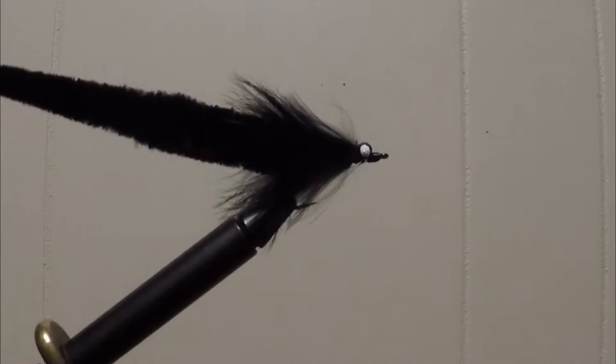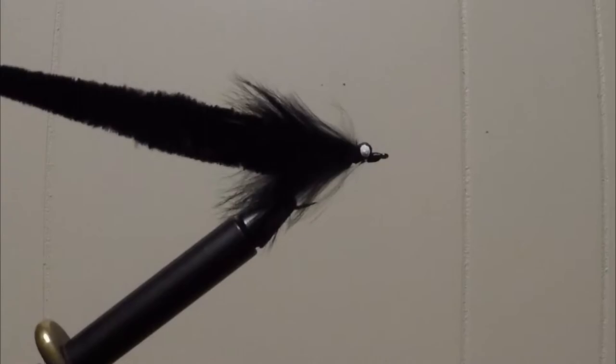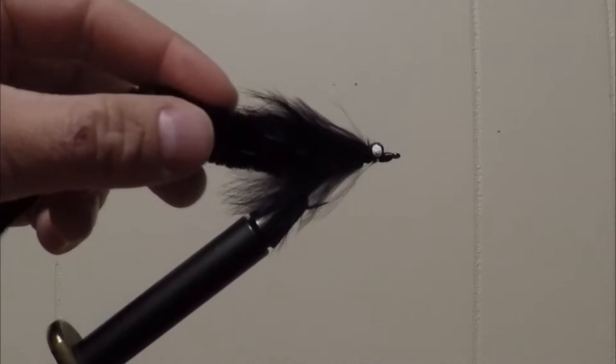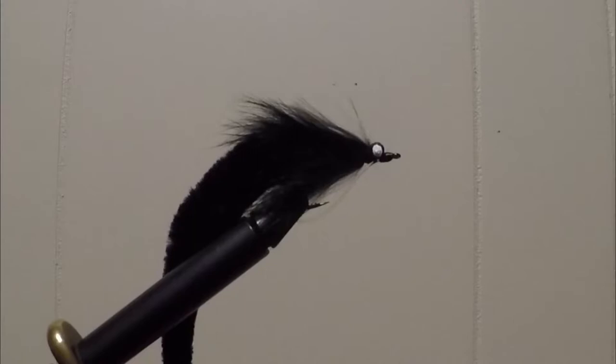It doesn't have a name. It's just a dragon tail worm fly. You get the dragon tail from Orvis. A few other places sell them. But all it is is a dragon tail, some cross cut rabbit strips which are a dime a dozen, a little bit of lead eyes, a little bit of mono weed guard. And that's it. I mean it's pretty straightforward. So we'll show you guys what to do here.